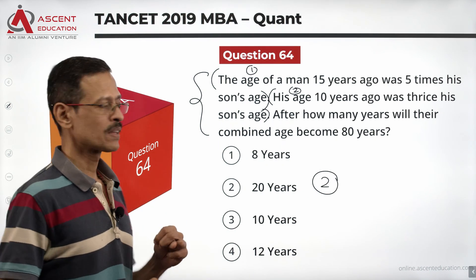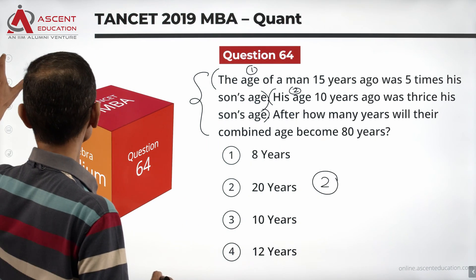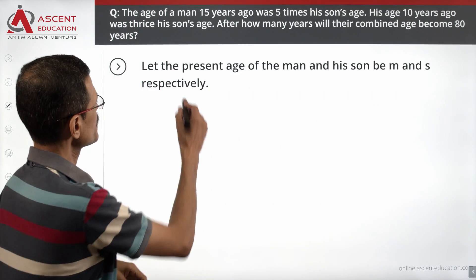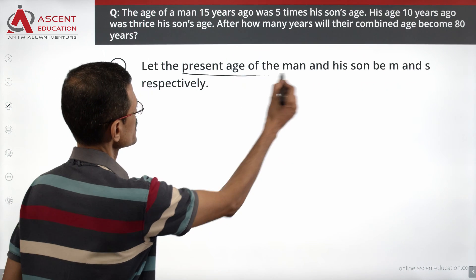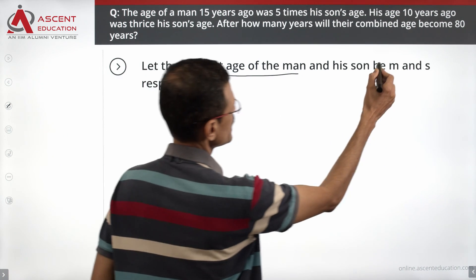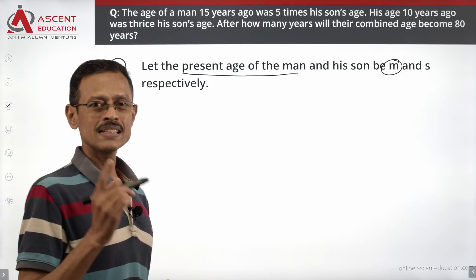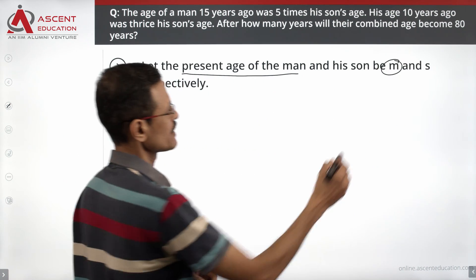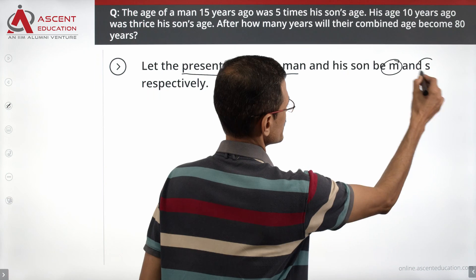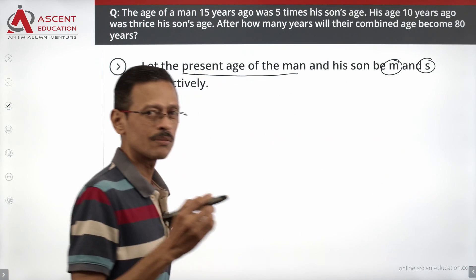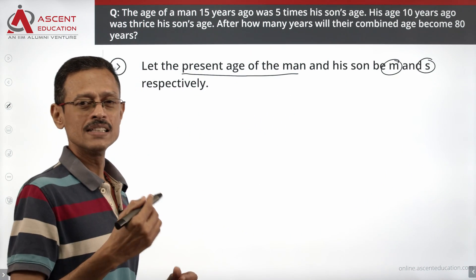Let's assign two variables. The first variable I am going to assign is the present age of the man — that would be m years. Present age of the son — s years. Let's give clarity to the variables: m for man, s for son.